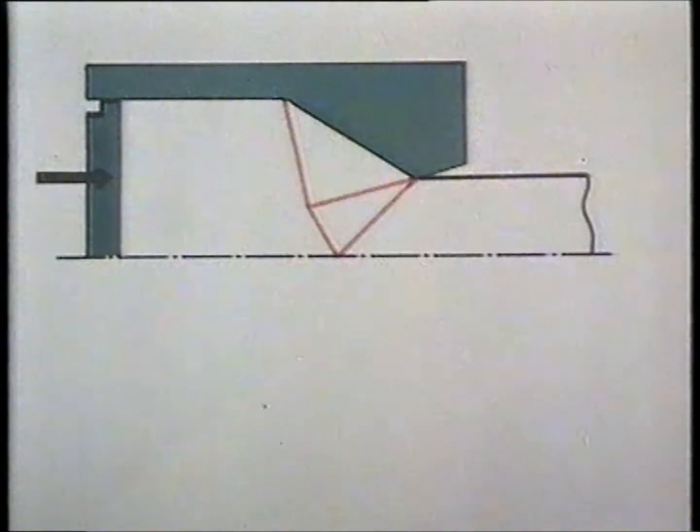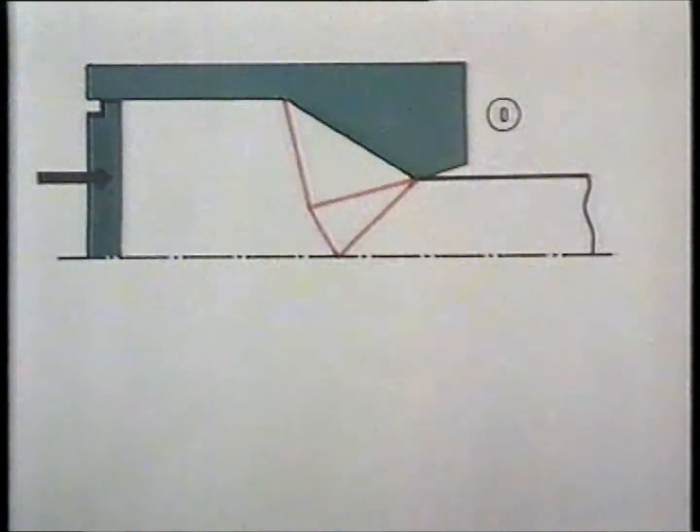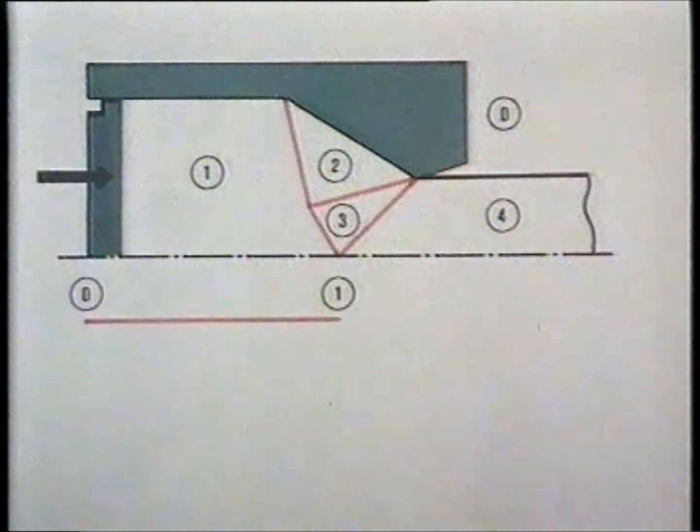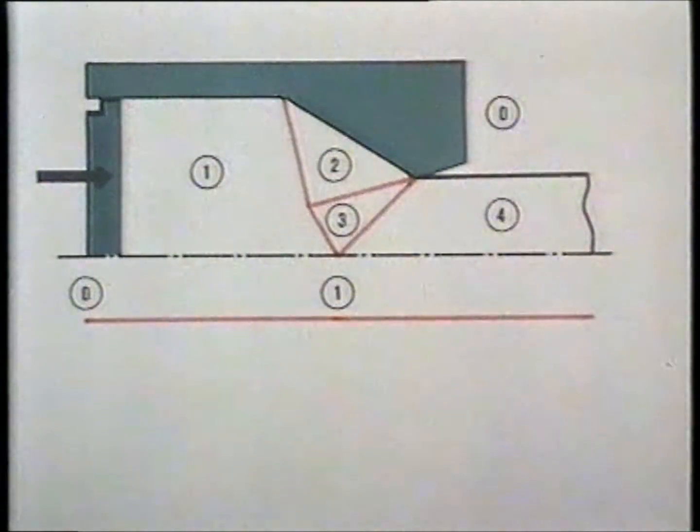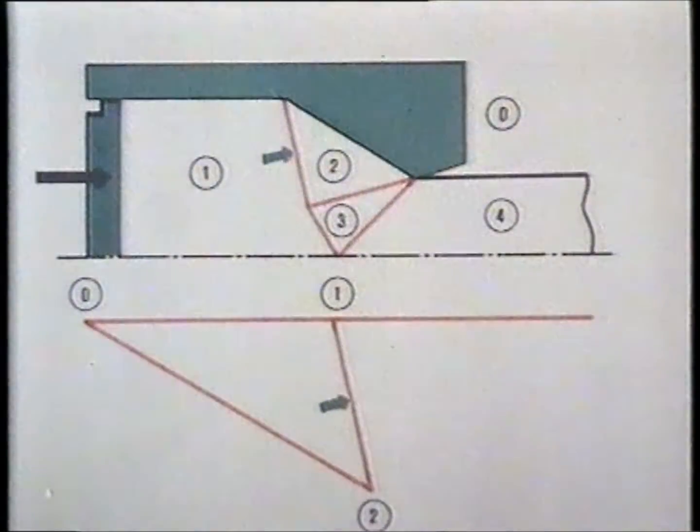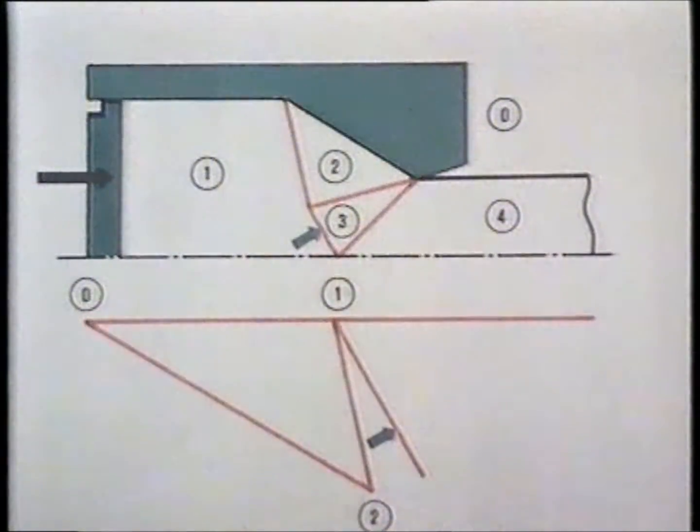For identification the regions of the field are numbered and we proceed to construct the hodograph. The entry velocity 0-1 equal to V is drawn first and extended since we know that the exit velocity is also horizontal. Then the velocity of each region is found by drawing lines parallel to the lines of discontinuity in the field.